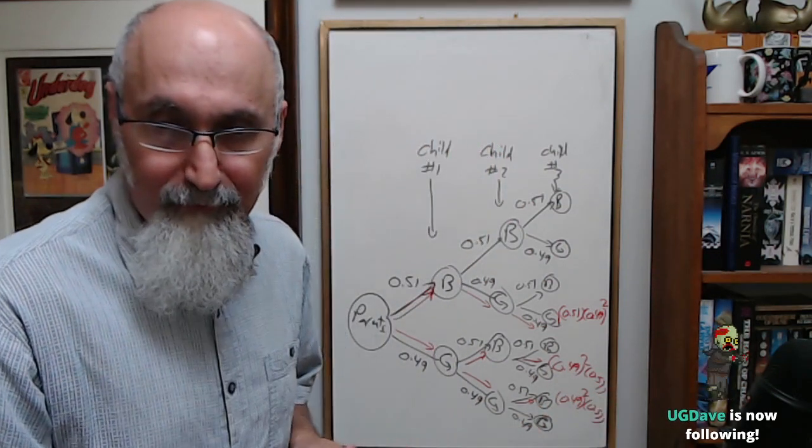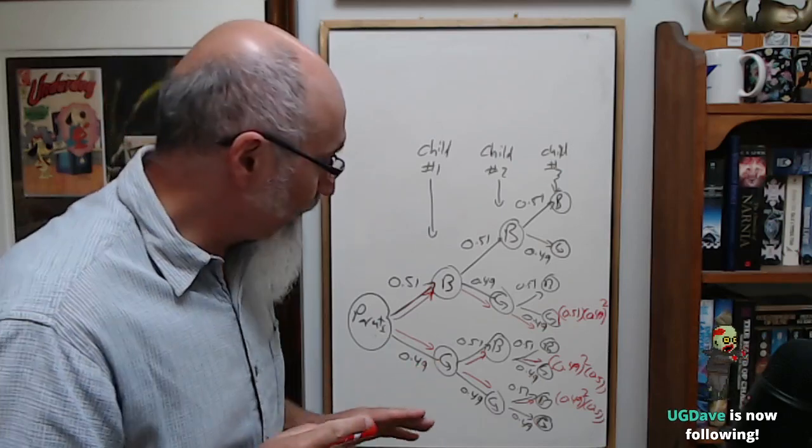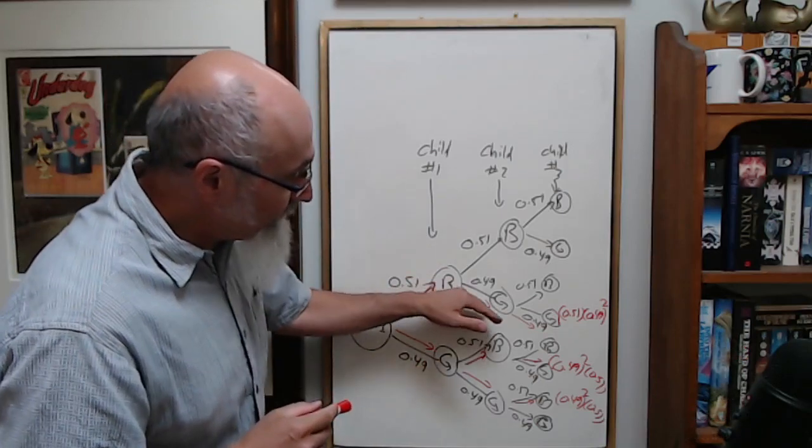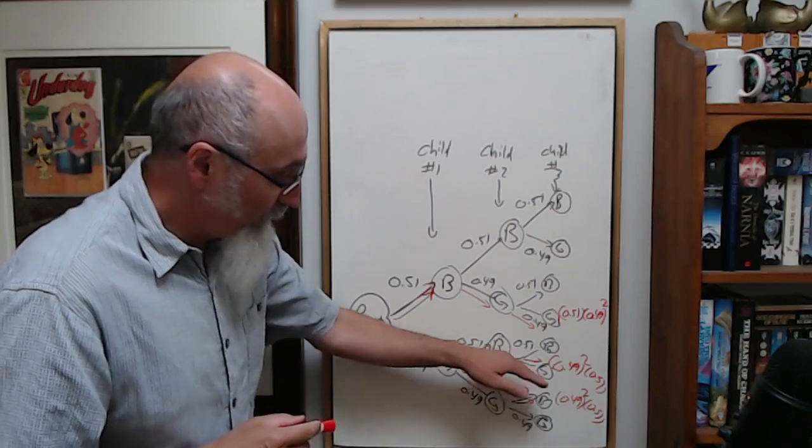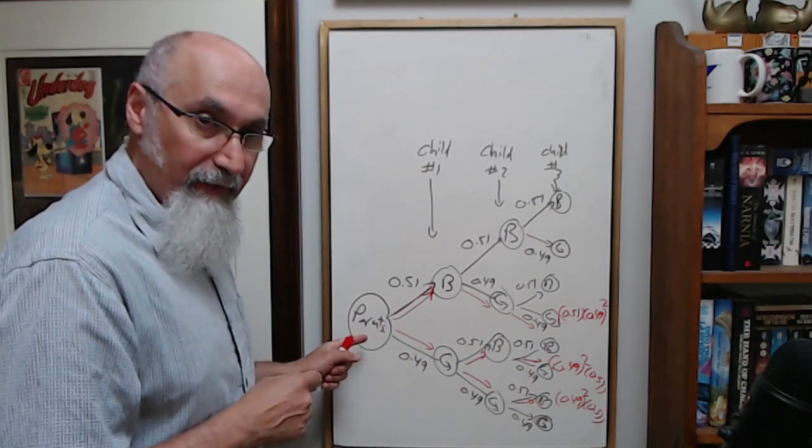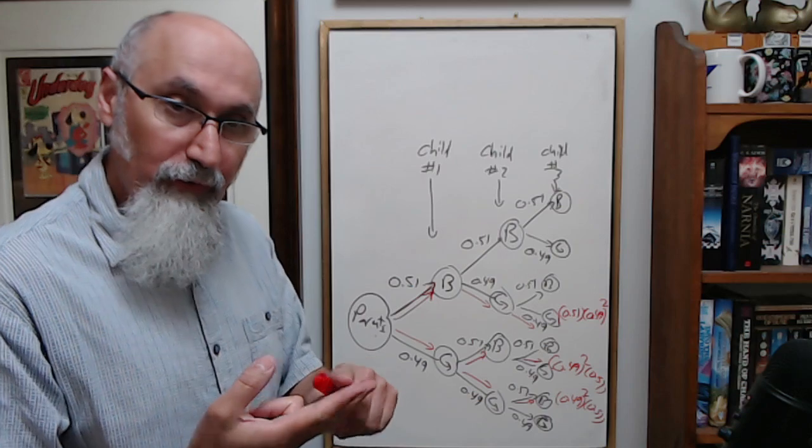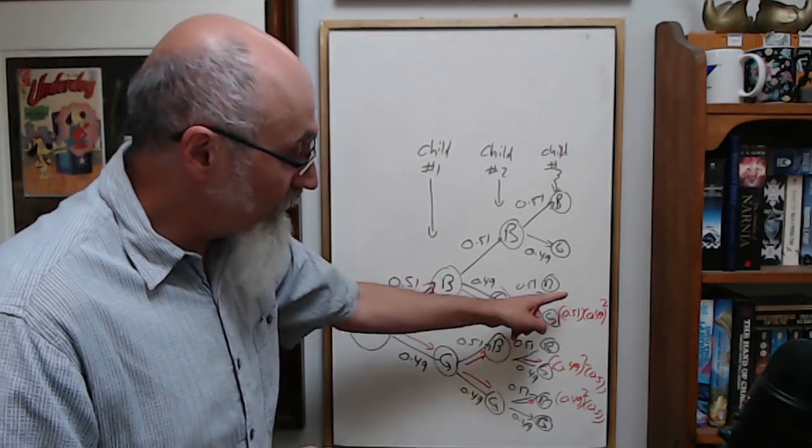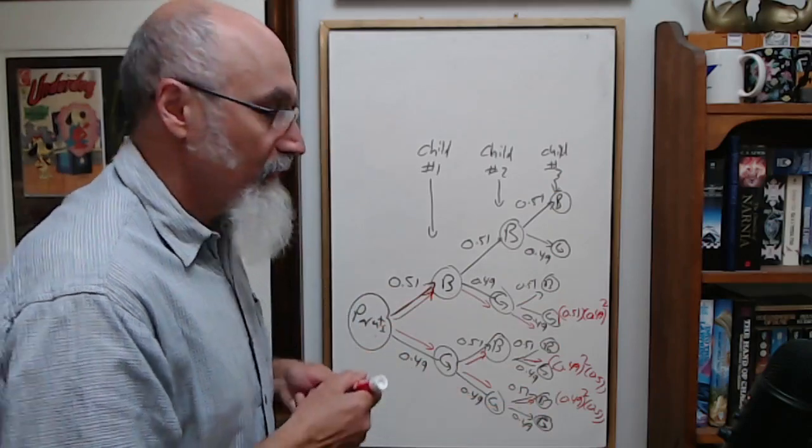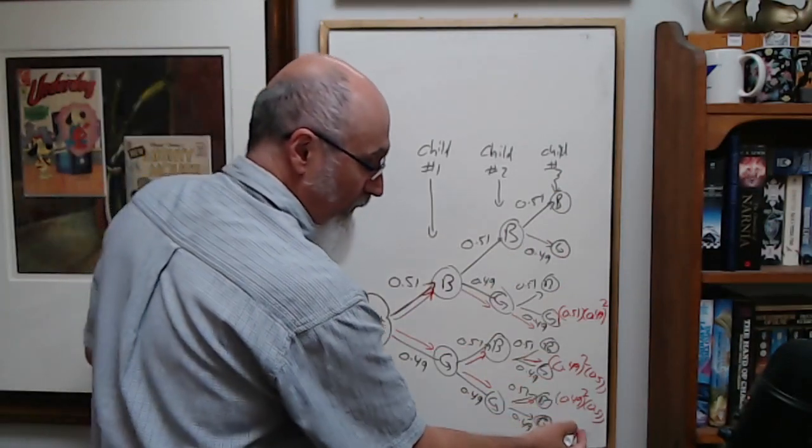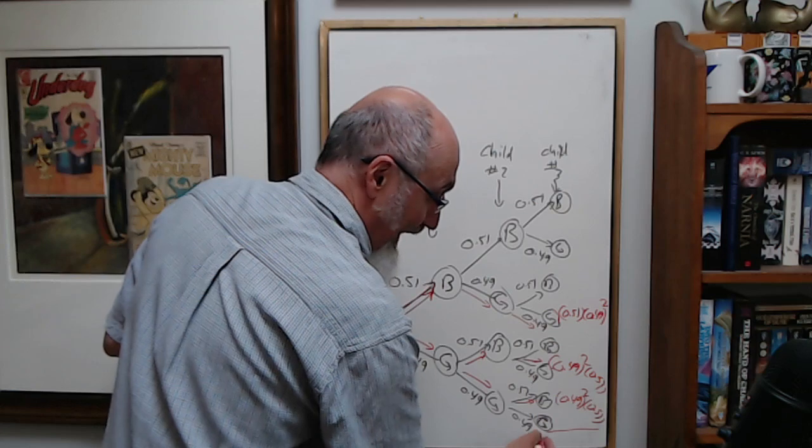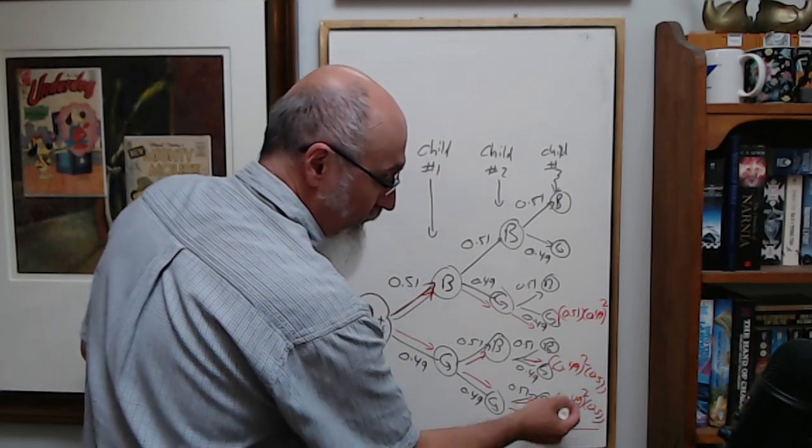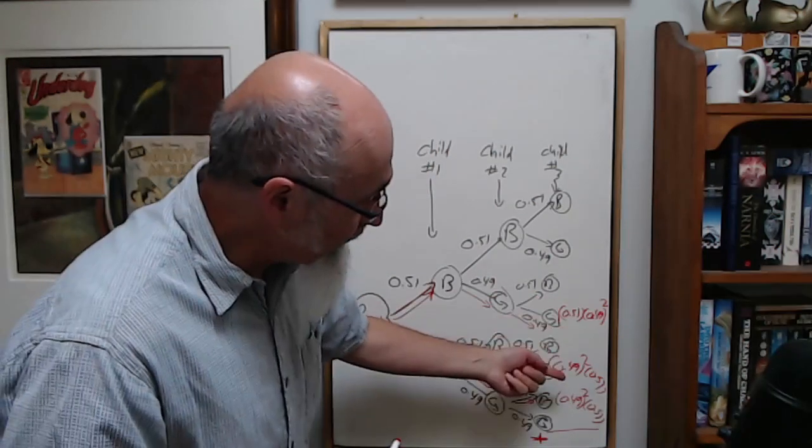And what you do, you add those up so you have the total probability. And this is where you add them, right? And if you're adding them, all three of them were the same: it's 0.49 squared times 0.51.